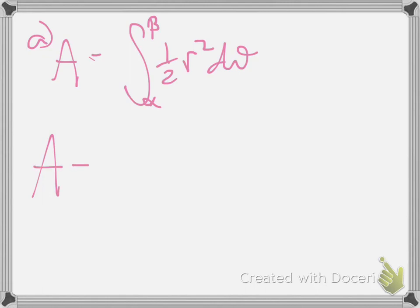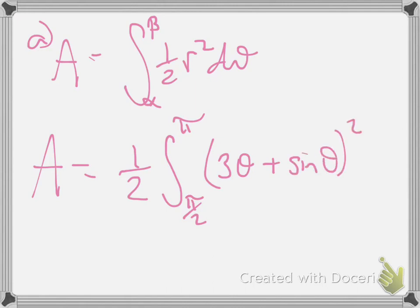Our area is 1/2 the integral from π/2 to π of r², which is (3θ + sin(θ))² dθ. Then we just need to run that through the calculator. I'm going to pause and see what the answer is.